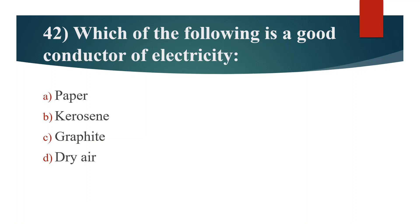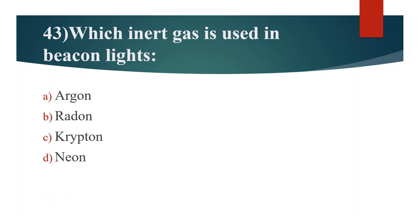Forty-second question. Which of the following is a good conductor of electricity? Option A: Paper. Option B: Kerosene. Option C: Graphite. Option D: Dry hair. Answer is Option C: Graphite.